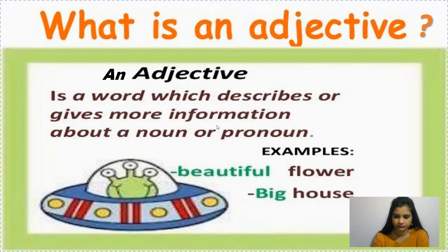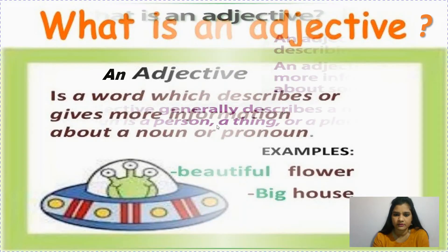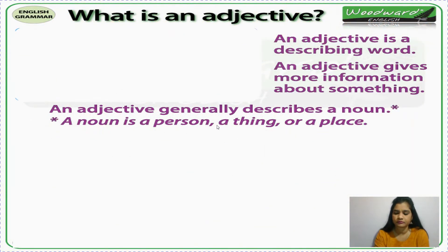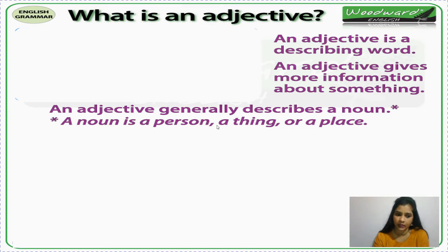Big house — house is a noun. Small house, big house, old house, new house — many things you can write. These will all become adjectives because they are describing the house. Let's read the definition again: an adjective is a describing word. An adjective gives more information about something, or you can say an adjective generally describes a noun. A noun is a person, place, animal or thing.